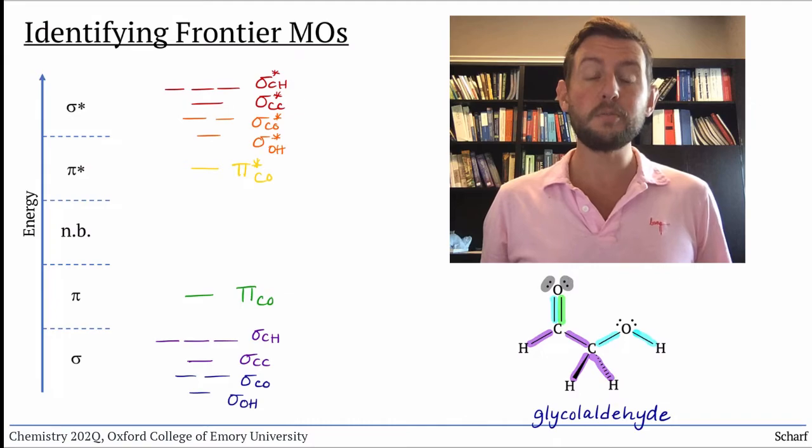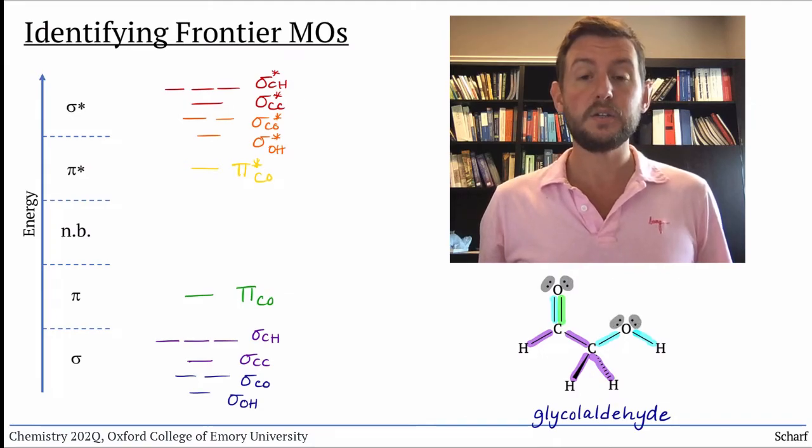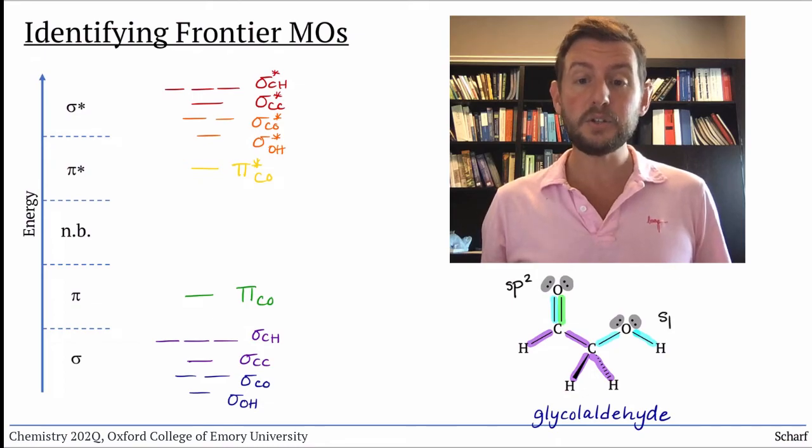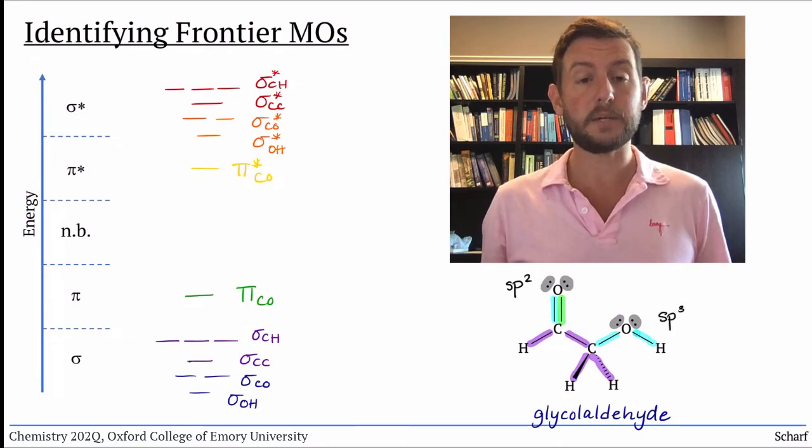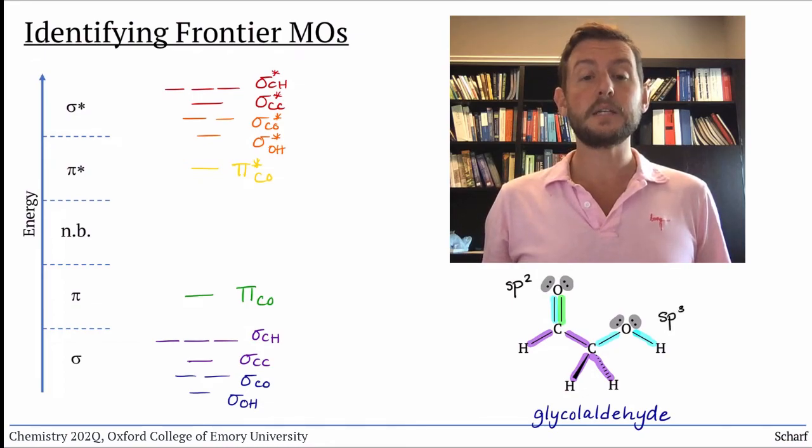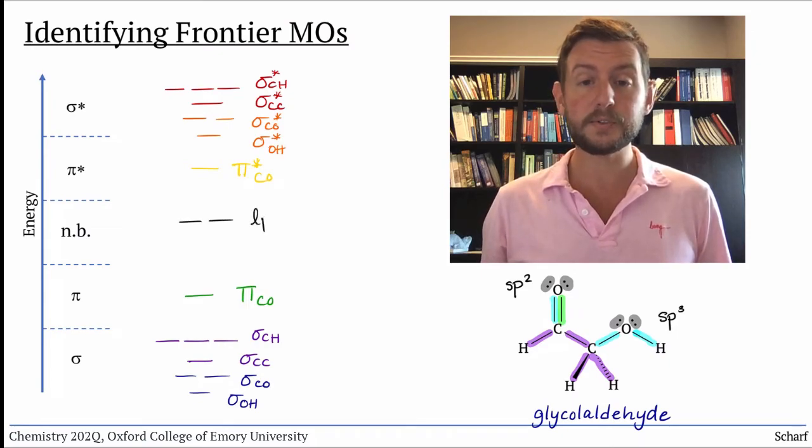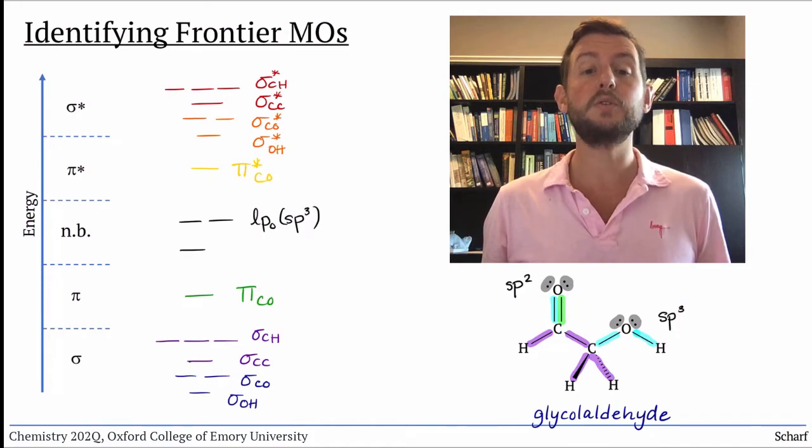Finally, there are four lone pairs on oxygen. Two are sp2 hybridized, and two are sp3 hybridized. Since sp3 orbitals are higher in energy than sp2 orbitals, we can distinguish between the two sets of lone pairs.